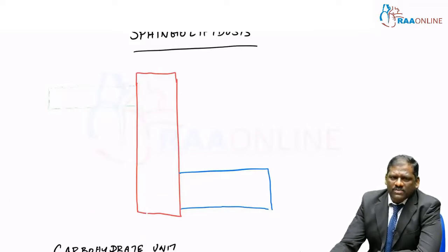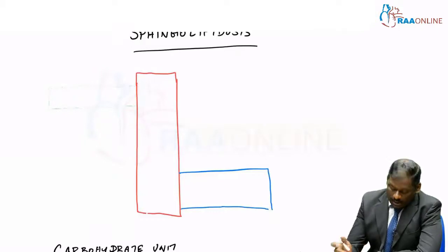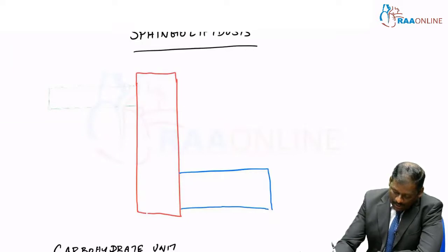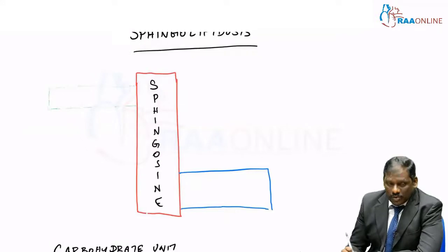Before going to the proper topic of sphingolipidosis, let me explain what exactly is a sphingolipid and what is a glycolipid. Sphingolipids are the one which has got sphingosine as its backbone alcohol.